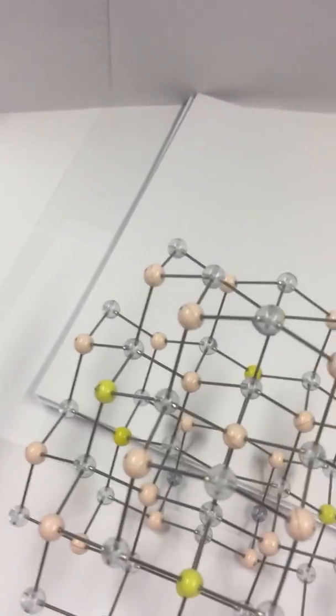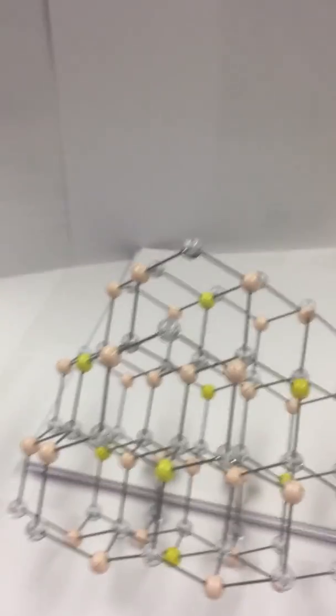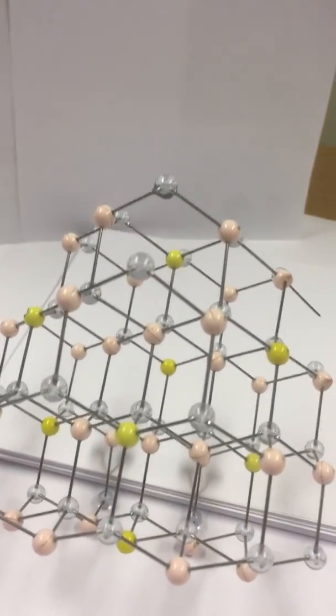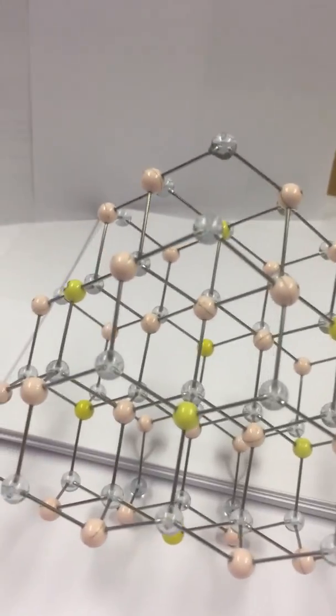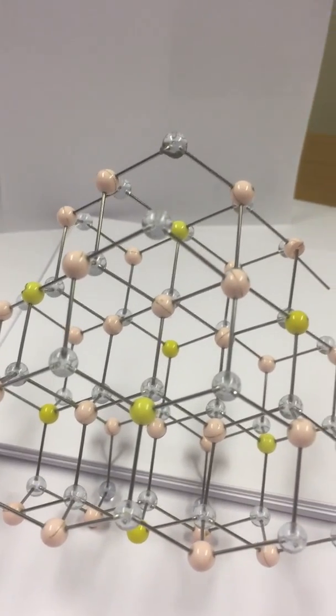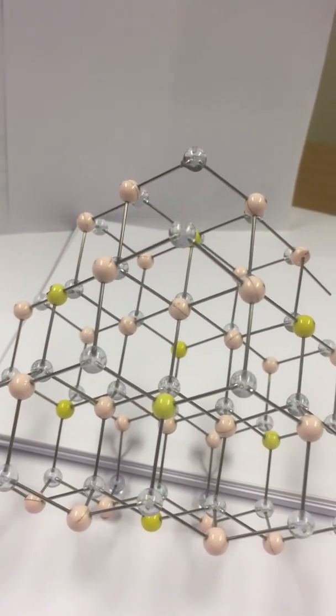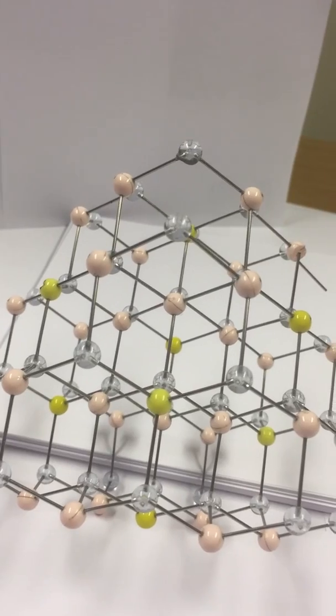we've got helpfully the corners of the face centered cubic cell, which form the crystal structure for the gallium arsenide lattice, picked out as yellow atoms.